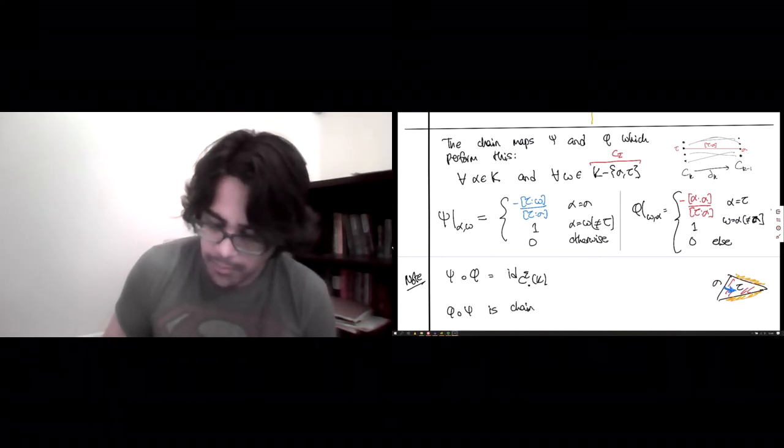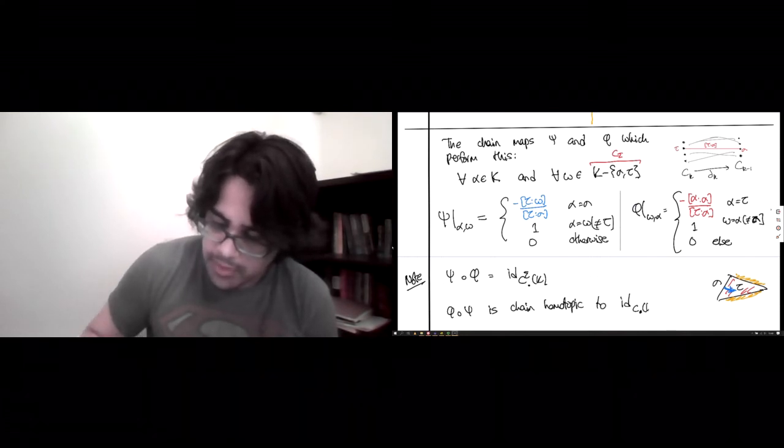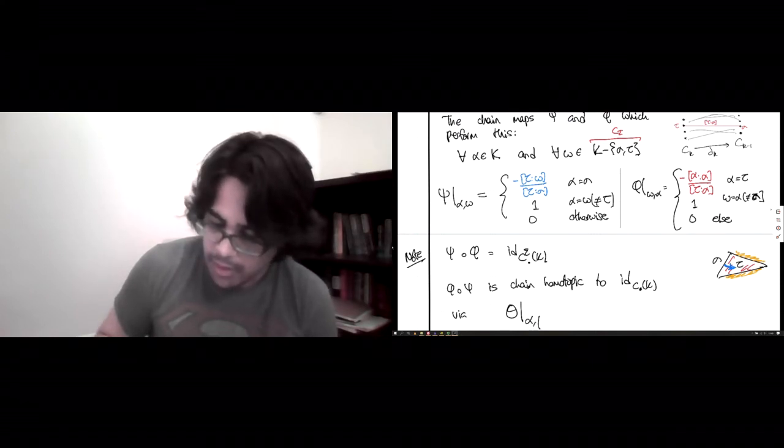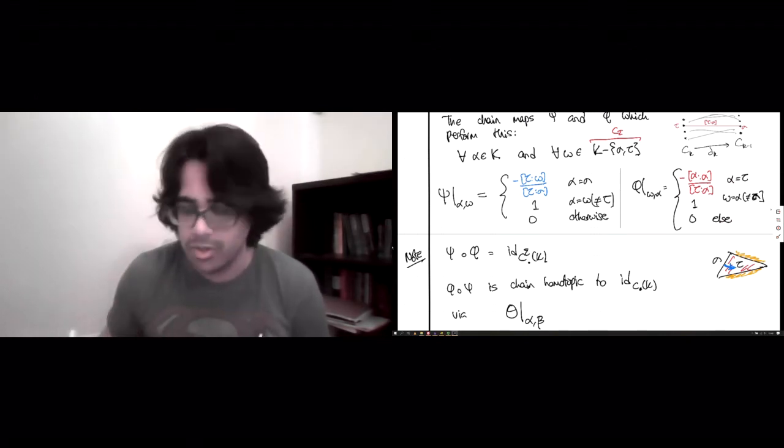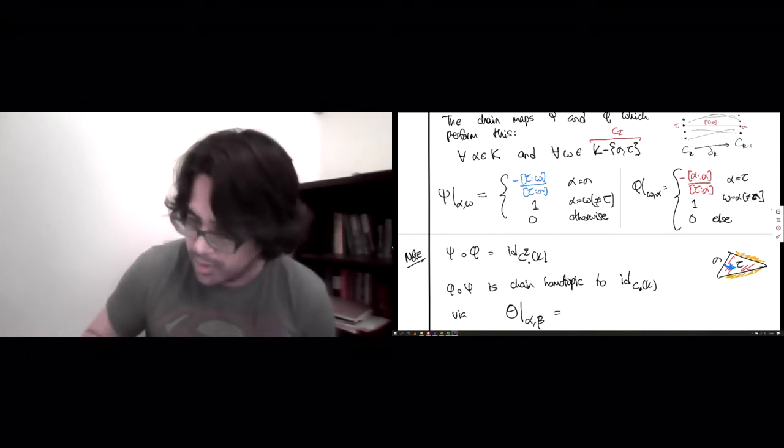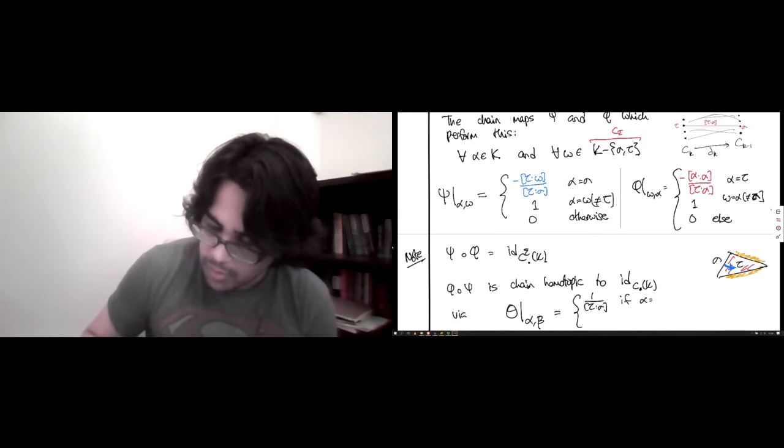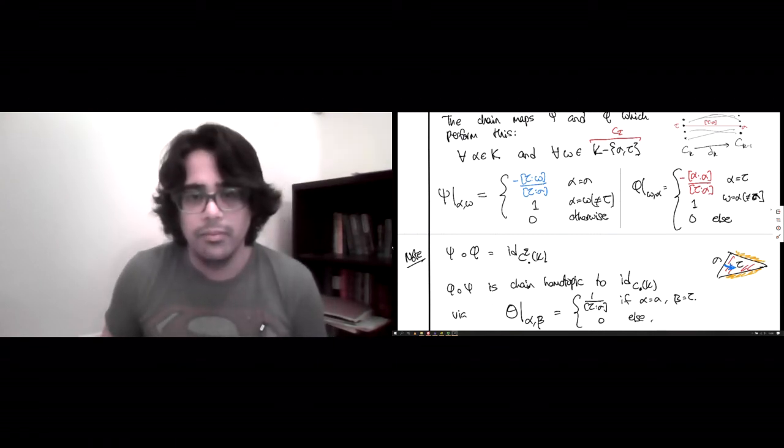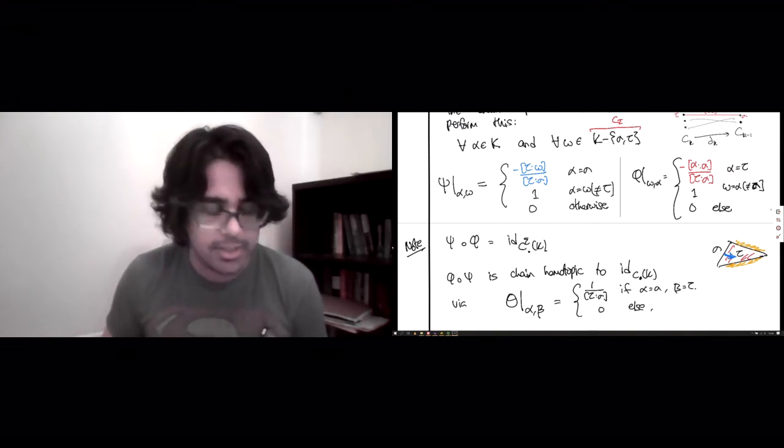So, this is chain homotopic to the identity on C_K via, so, I have to give you a chain homotopy that sends every chain to a chain of dimension one higher. And, this can be implemented via the following matrix. So, it's 1 over tau sigma, if alpha equals sigma and beta equals tau, and it's zero otherwise. So, that's a full description of what it takes to remove a single pair, sigma and tau, that have been matched by your acyclic partial matching.